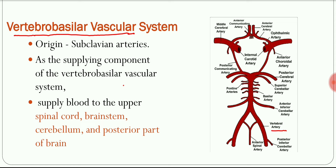The vertebral artery arises from the first part of the subclavian artery. After its origin it runs upward in the region of the neck and reaches the posterior cranial fossa. This system is important because it supplies the upper part of the spinal cord, brain stem, cerebellum, and the posterior part of the brain — mainly the region of the occipital lobes.